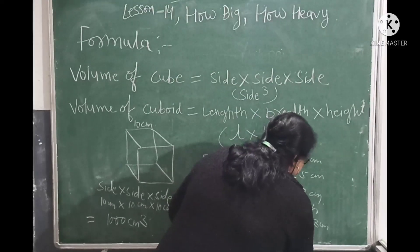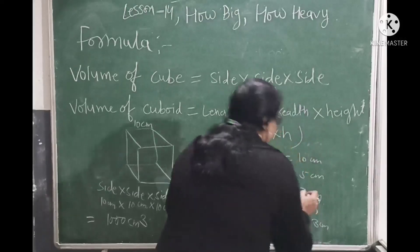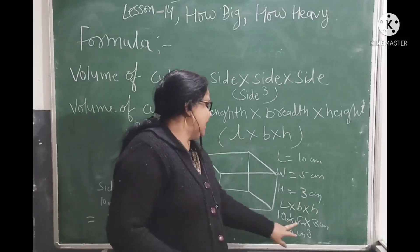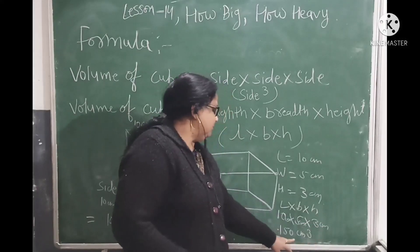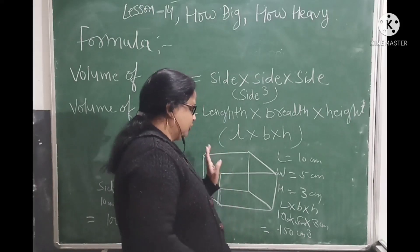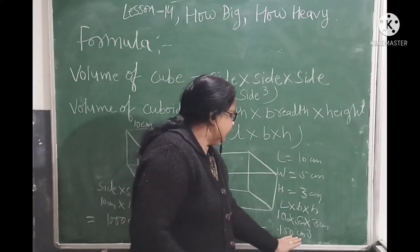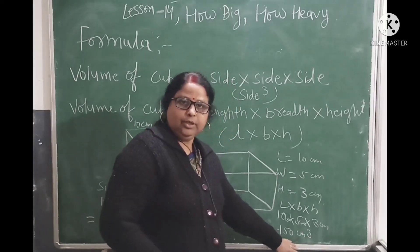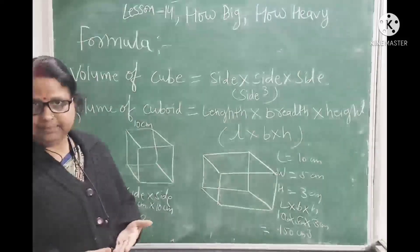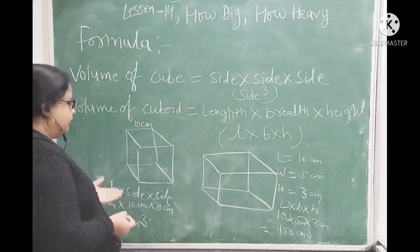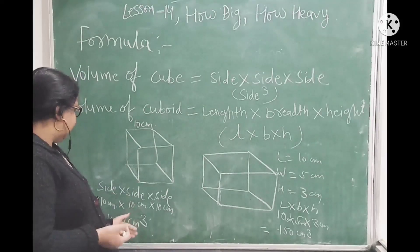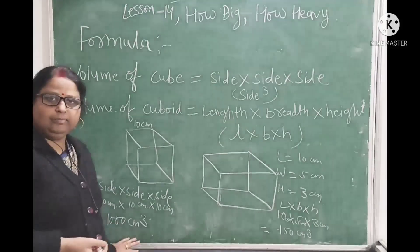The volume of the cuboid is 150 cm³. We show the measurement unit as cube because we are multiplying cm three times. In the last lesson, we studied area, where we had 2-times multiplication and used the square unit. Here we multiply 3 times, so we show this unit as cube.